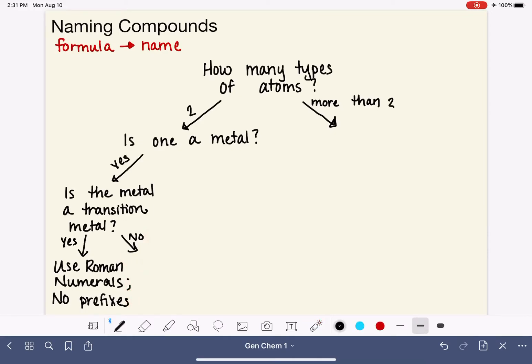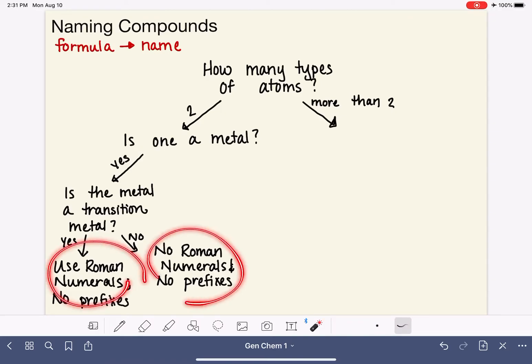If your metal is not a transition metal, then it's in group 1A or group 2A. That means you have no Roman numerals - we only use those on transition metals. And also no prefixes: no di-, no tri-, no tetra-, no mono-.